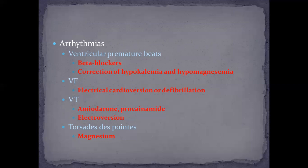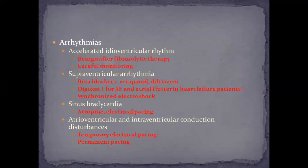For ventricular tachycardia, amiodarone and procainamide can be used. If the patient is hemodynamically unstable, electrical cardioversion should be given. For torsades de pointes, magnesium sulfate is the drug of choice. For accelerated idioventricular rhythm, it is usually benign after fibrinolytic therapy, so only careful monitoring is needed.